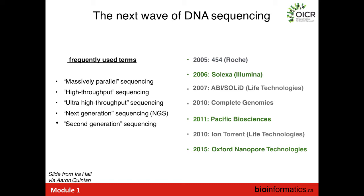You'll hear a lot of different terms used for this type of sequencing. You might hear massively parallel sequencing — a very early term. High throughput sequencing is now the preferred term. Also ultra high throughput sequencing, next generation sequencing, second generation sequencing. All these terms essentially describe the sequencers we now have available which can sequence genomes very cheaply. I prefer high throughput sequencing.